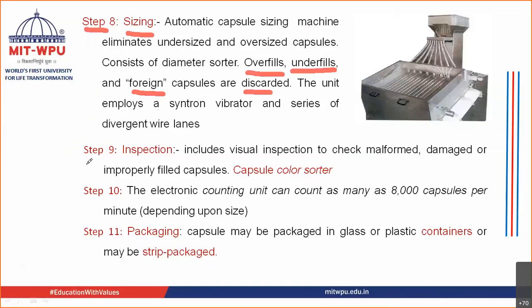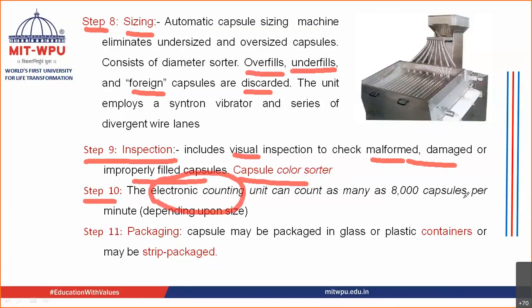Step nine is inspection, done visually and manually, whereby malformed or damaged capsules are removed. The color is also checked to verify that proper color has been obtained after filling. In step ten, electronic counting takes place — counting approximately 8,000 capsules per minute. In the final step, step eleven, packaging is done — either in a container, strip packing, or blister packing.